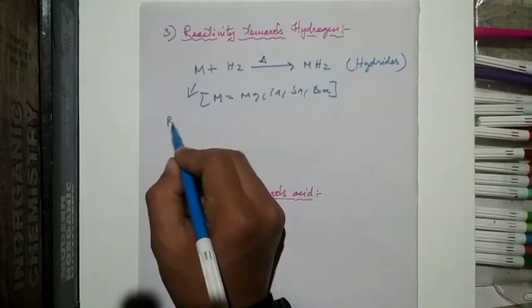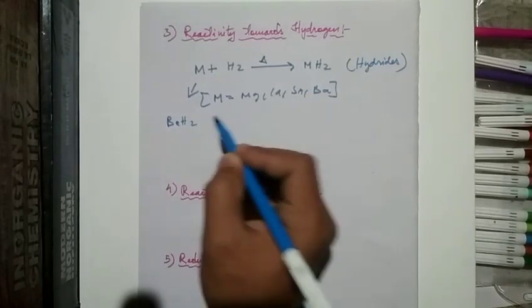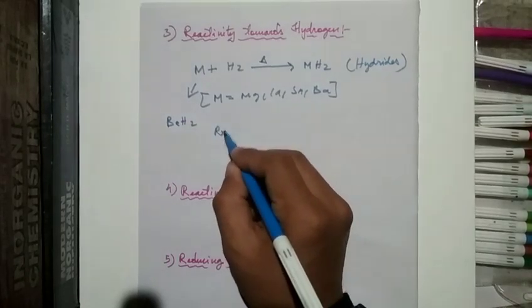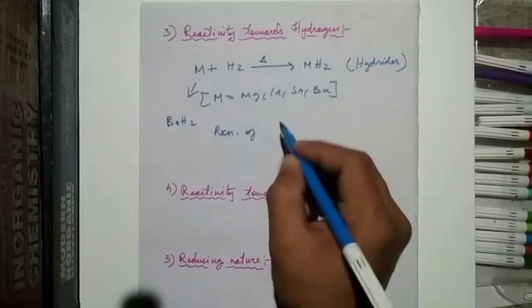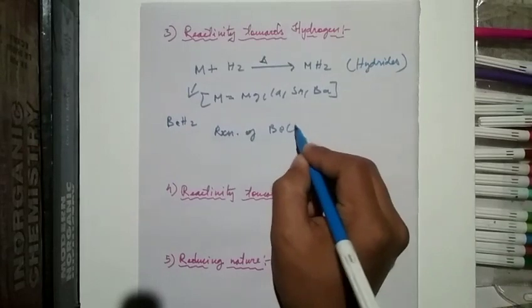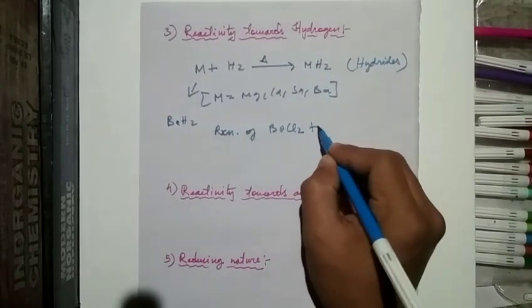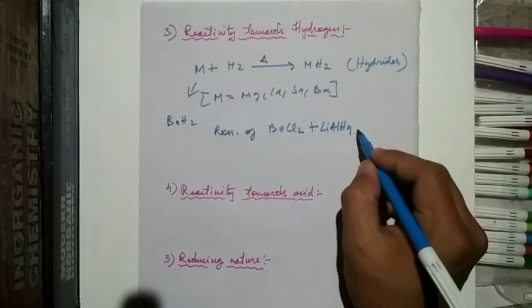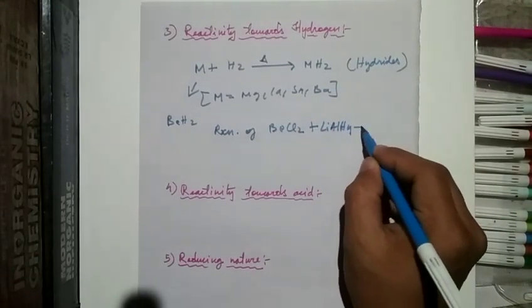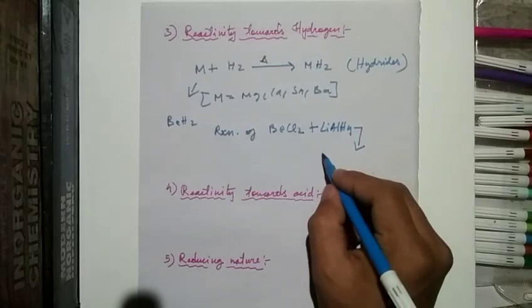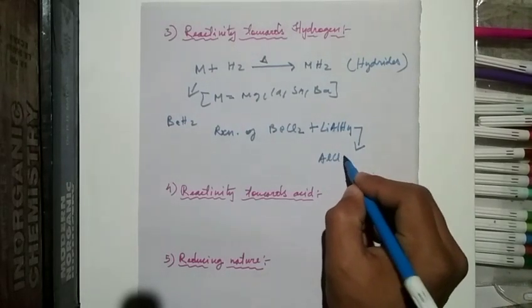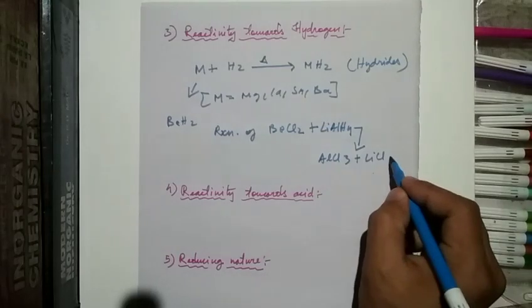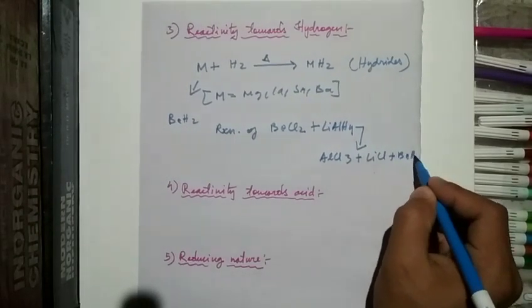BeH₂ can be prepared by the reaction of BeCl₂ with lithium aluminum hydride (LiAlH₄). The products are AlCl₃, LiCl, and BeH₂.